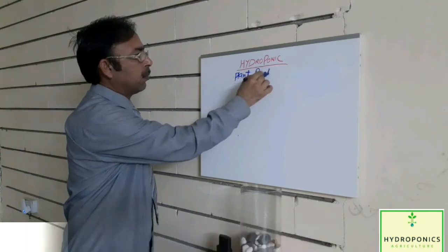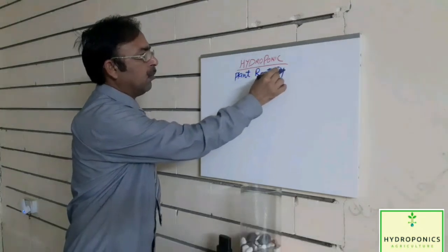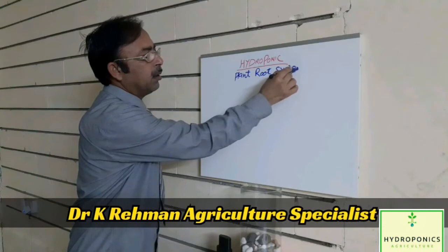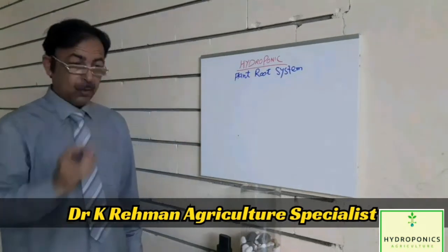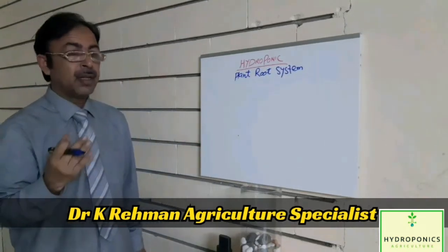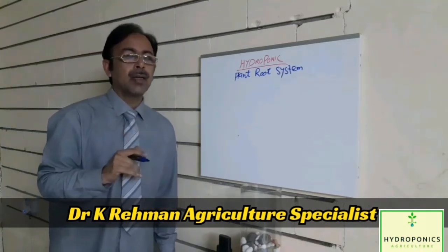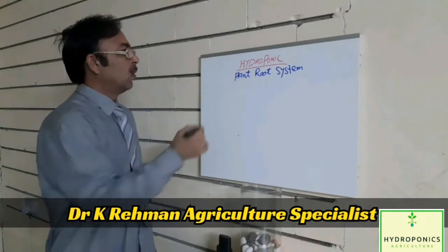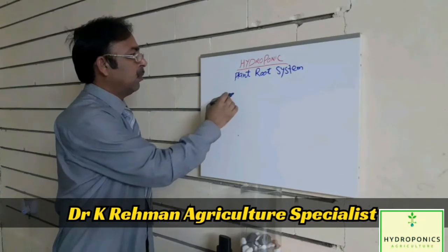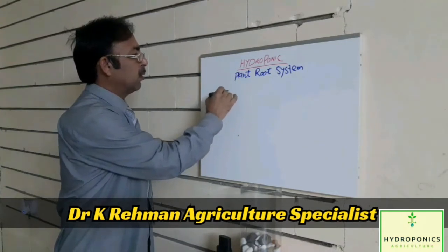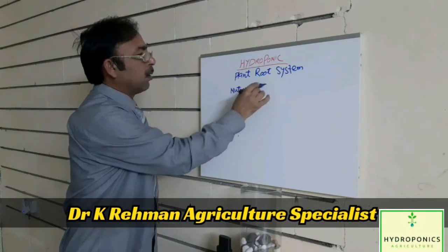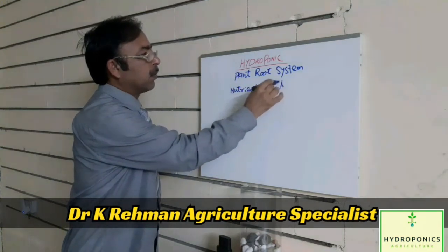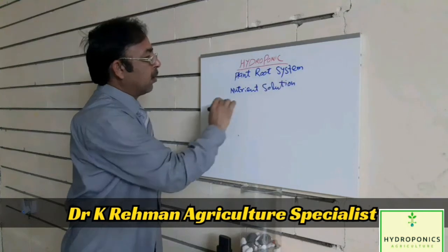Basically, the efficiency of hydroponics depends on the root system. If we control the environment of plant roots, then our system will be more efficient and will perform more accurately. And we can get higher yield and healthy plants.